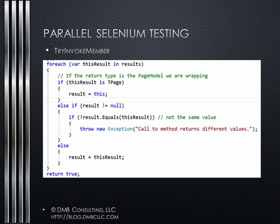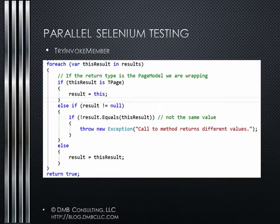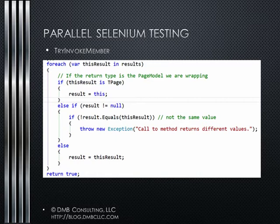The second thing we do is process the return results using a basic foreach loop over the results. Inside the loop, if the type returned is the same type as the page being proxied, we set the return value equal to the proxy object. If the result is not null — meaning a previous result existed or we've already processed the loop — we check whether the value of the current result matches results already processed; if it doesn't, we throw an exception. Finally, we set the result to whatever we have at that point and return true to tell the system we were able to process the method.